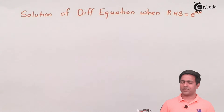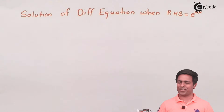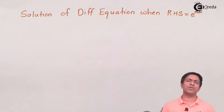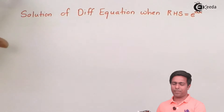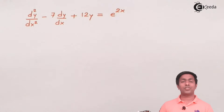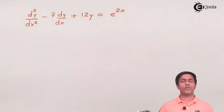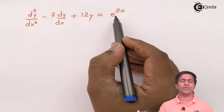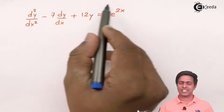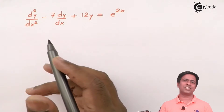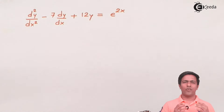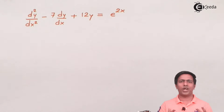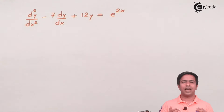We are going to find out the solution of a higher order differential equation, or linear differential equation, when the right hand side is e to the power ax. I have taken an example — a higher order differential equation with right hand side as the exponential term e to the power 2x. To solve such type of questions we use this method. First, we'll list down the steps required, and then apply those steps on this question to get the solution.